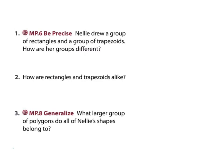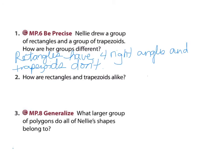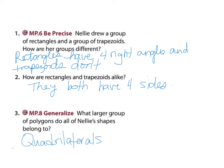Nellie drew a group of rectangles and a group of trapezoids. How are her groups different? Remember, rectangles have four right angles and trapezoids do not. How are rectangles and trapezoids alike? They both have four sides. What larger group of polygons do all of Nellie's shapes belong to? All of her shapes are quadrilaterals because they all have four sides.